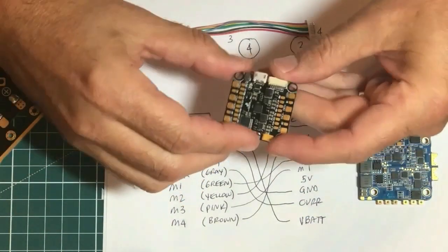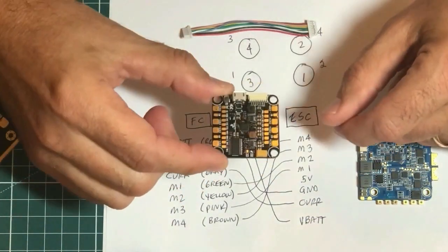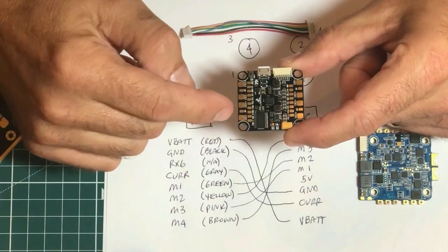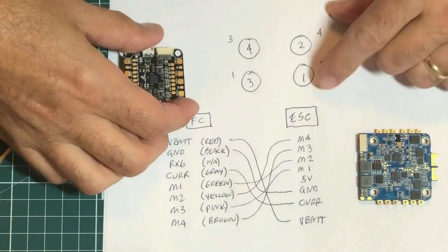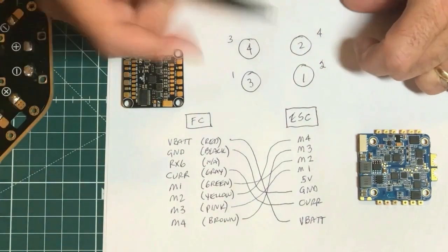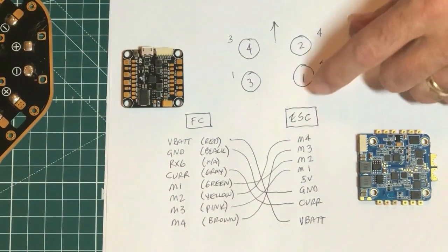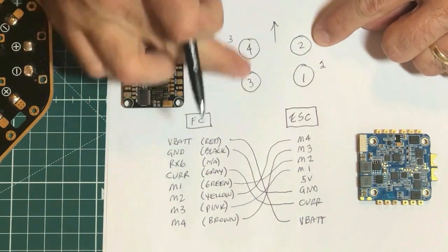However, what you notice on this flight controller - this is a CL Racing flight controller - the motors are set up like you'd expect in a standard quad with this is forward here: motor one, motor two, motor three, and motor four.